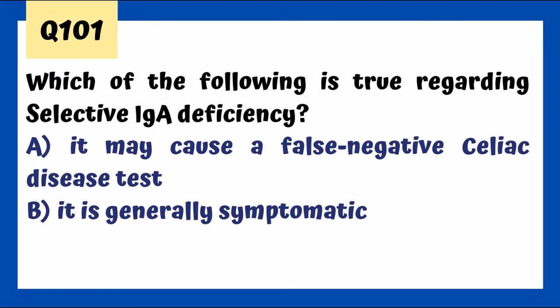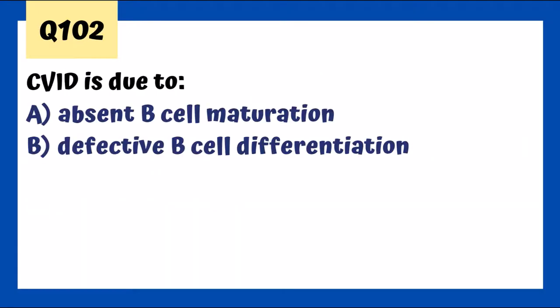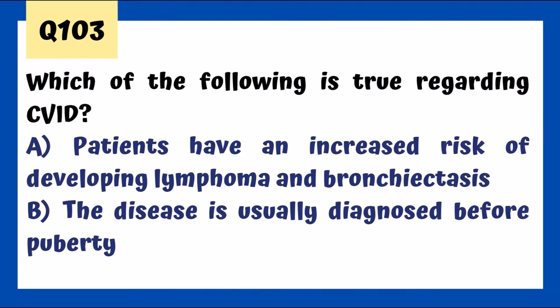Selective IgA deficiency is generally asymptomatic but may cause a false negative celiac disease test. Patients with IgA deficiency are also more likely to develop celiac disease themselves. CVID — common variable immunodeficiency — is due to defective B-cell differentiation, not absent maturation. We see increased risk of developing lymphoma and bronchiectasis, and the disease is usually diagnosed after puberty.